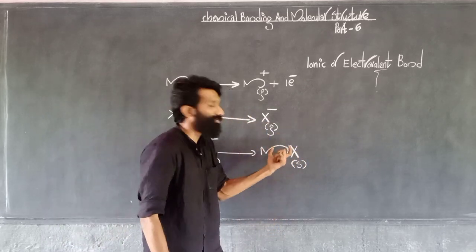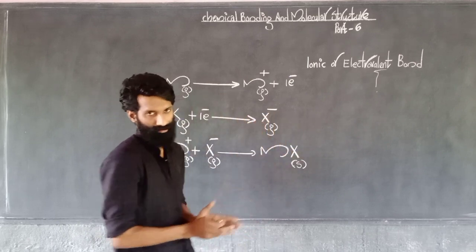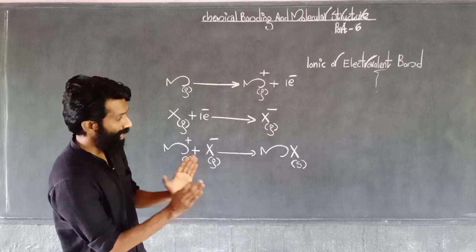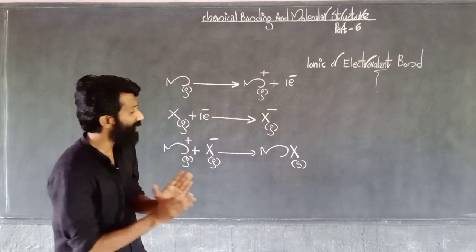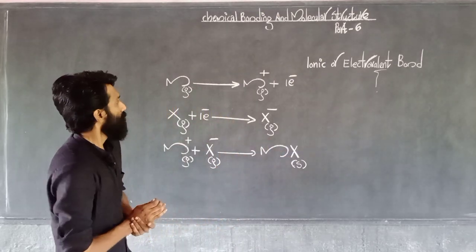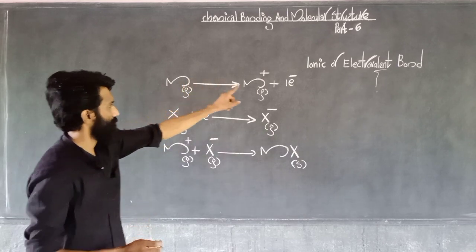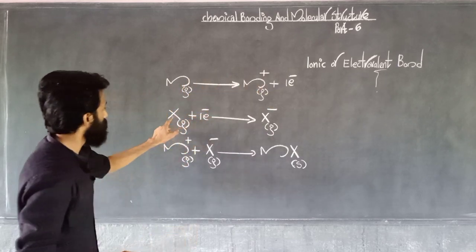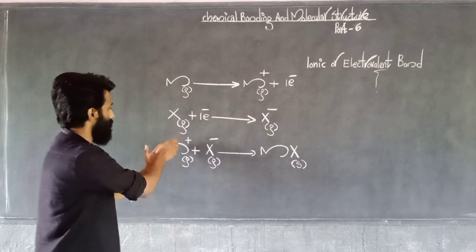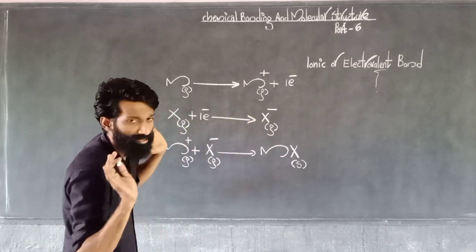That is an ionic compound. Ionic compound is solid. Let's give you an example. Sodium gas: Na gives up 1 electron to become Na plus. Cl gains 1 electron to become Cl minus. Na plus plus Cl minus gives NaCl solid.